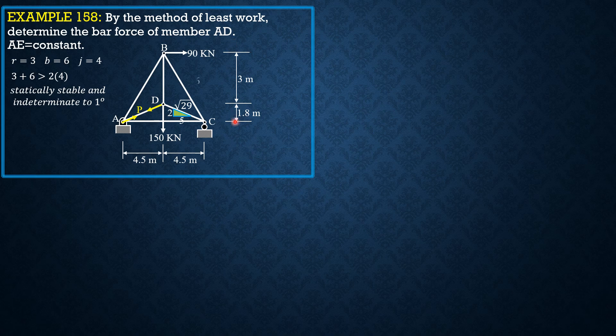So for the reactions, summation moment at C equals 0. Ay times 9 plus 90 times 4.8 equals 150 times 4.5. You'll get 27 kilonewtons here at C, that's 123 kilonewtons. So verify that by statics. Of course, horizontally at C, 90 kilonewtons to the left.